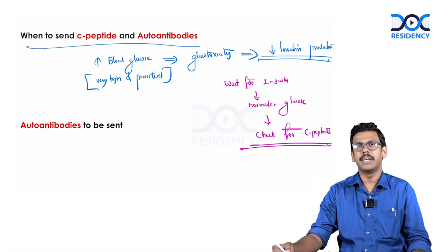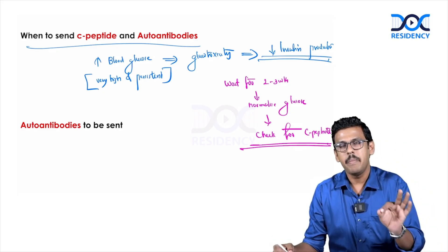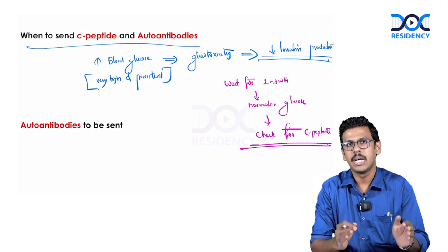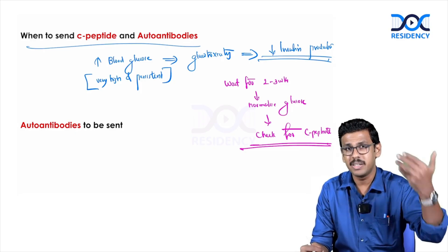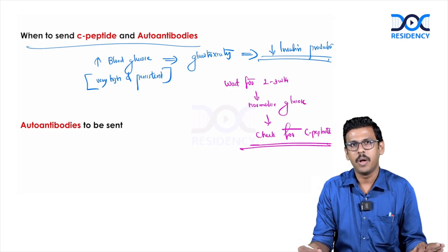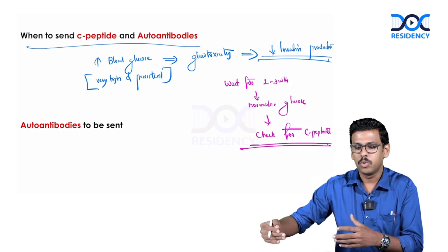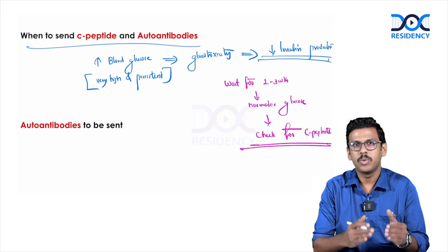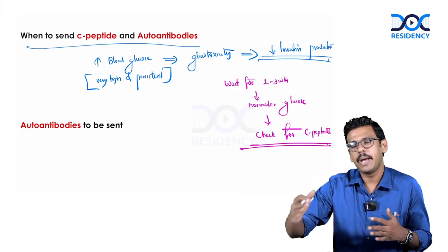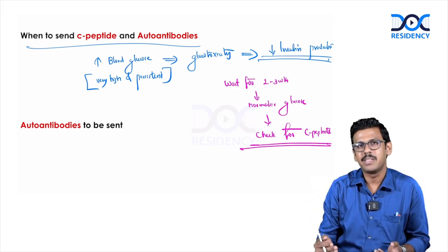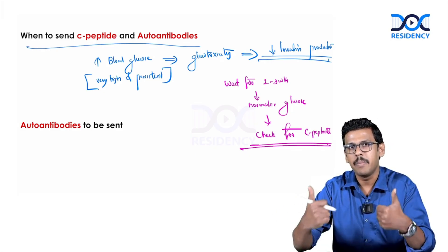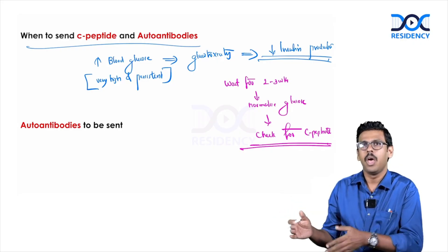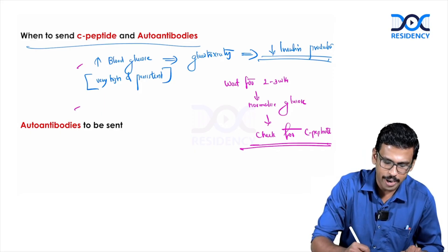Even in patients with type 2 diabetes and glucotoxicity, untreated patients may have very high blood glucose in the 400s or 500s. If C-peptide is checked before glycemic control, it could be less than 0.6 ng/mL, leading to a wrong diagnosis of type 1 diabetes. Therefore, wait two to three weeks with good glycemic control before sending the sample for C-peptide.